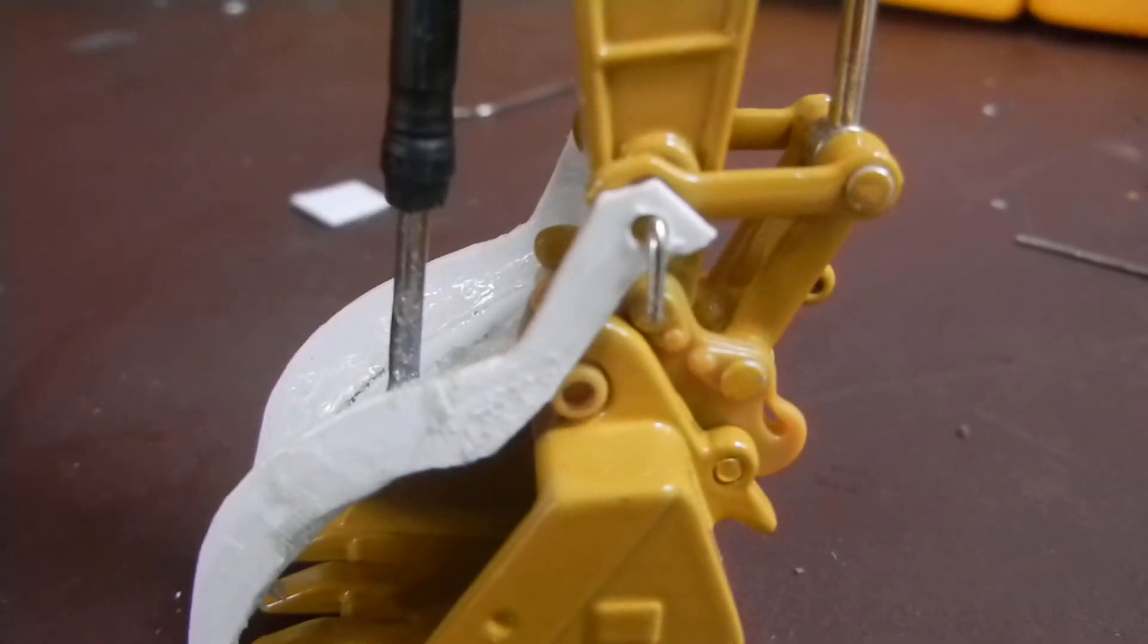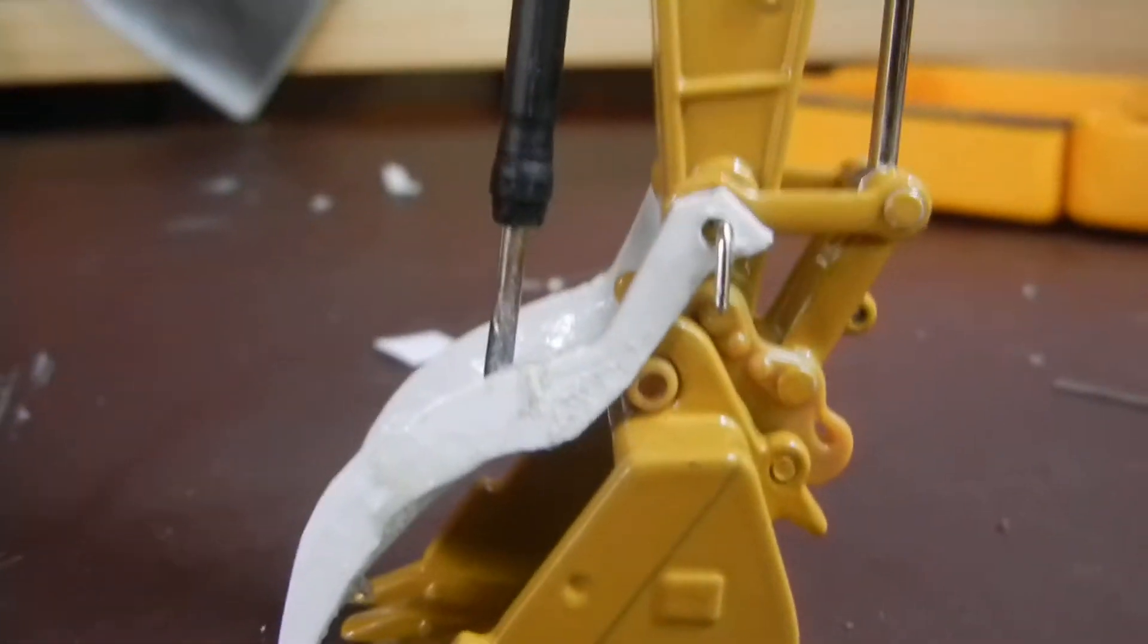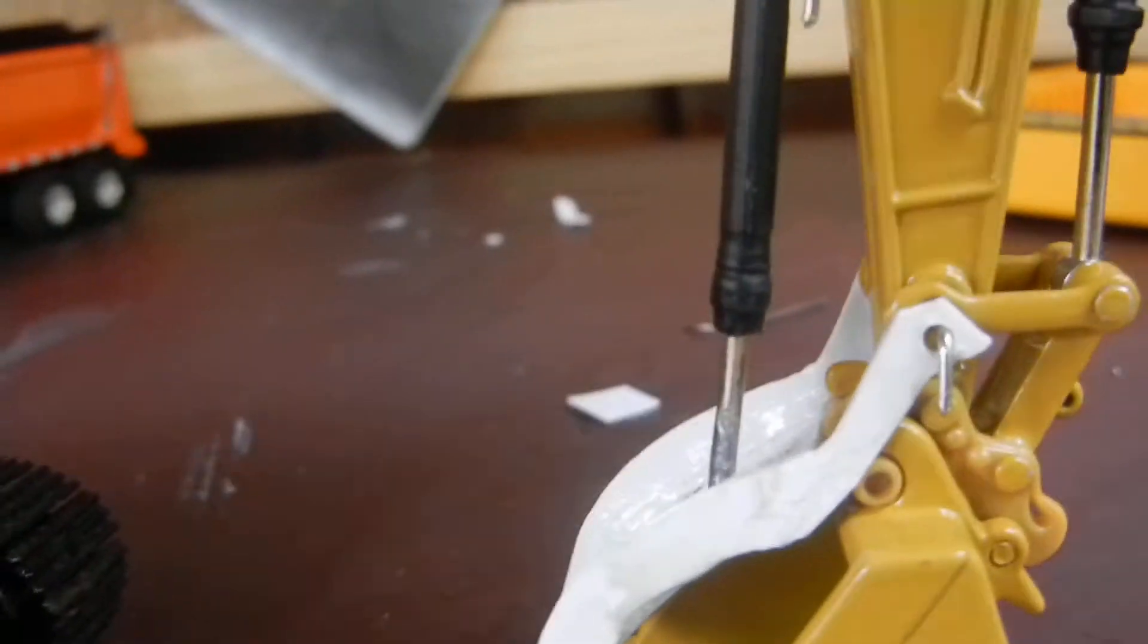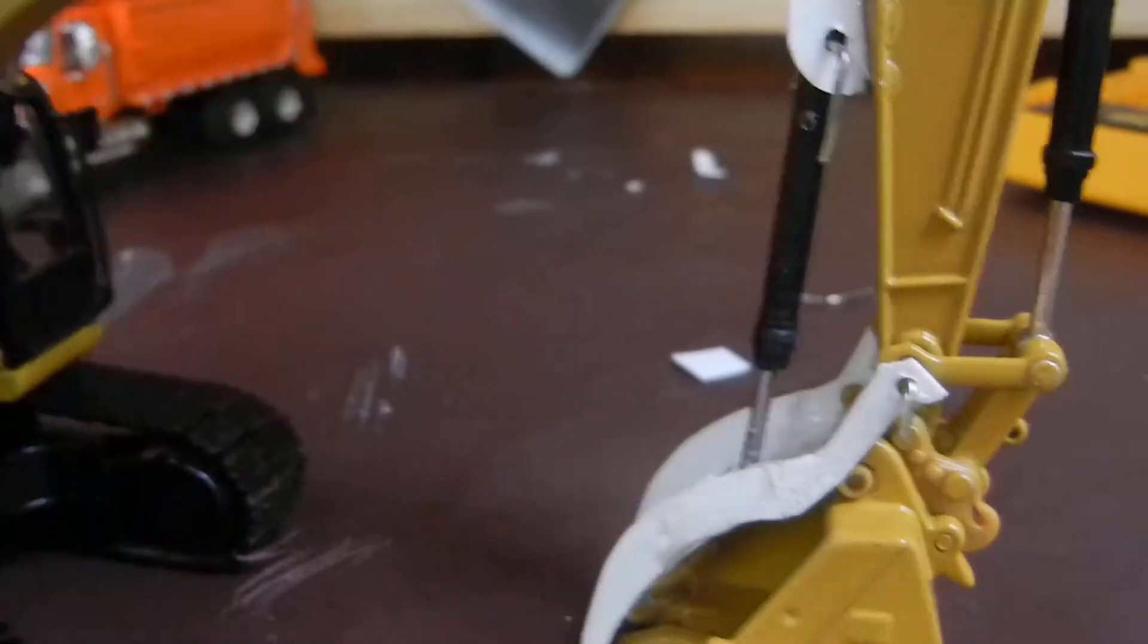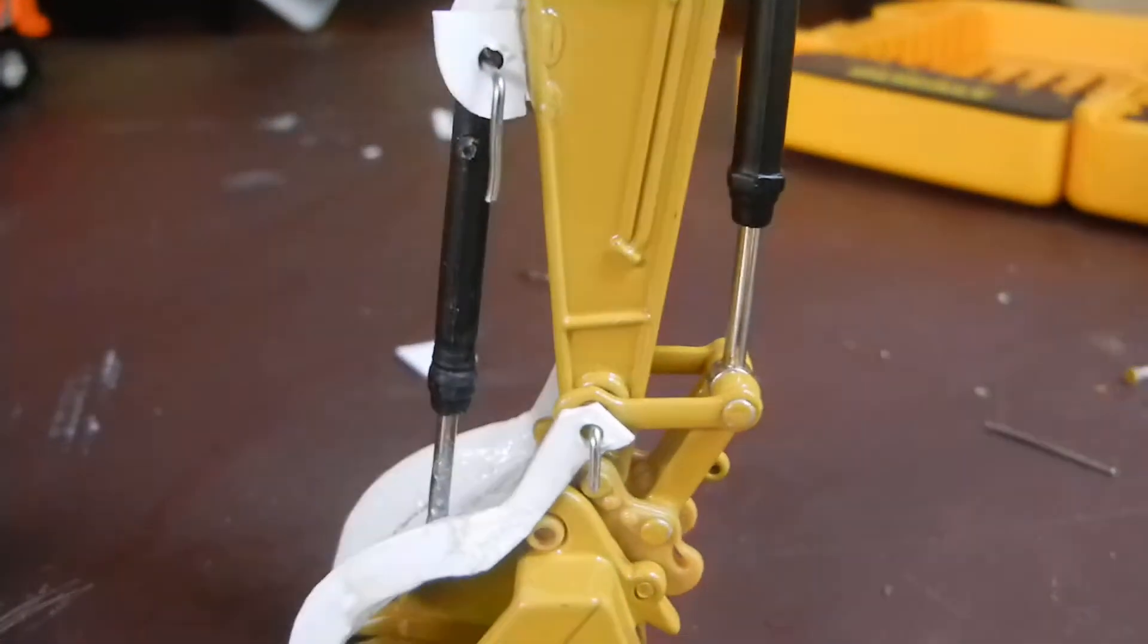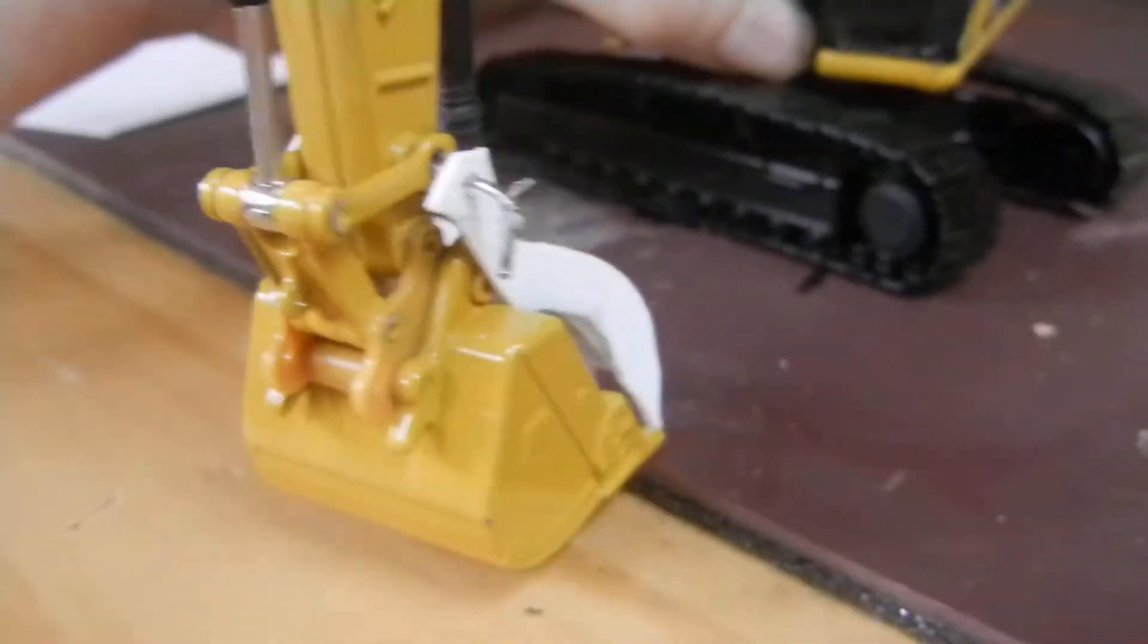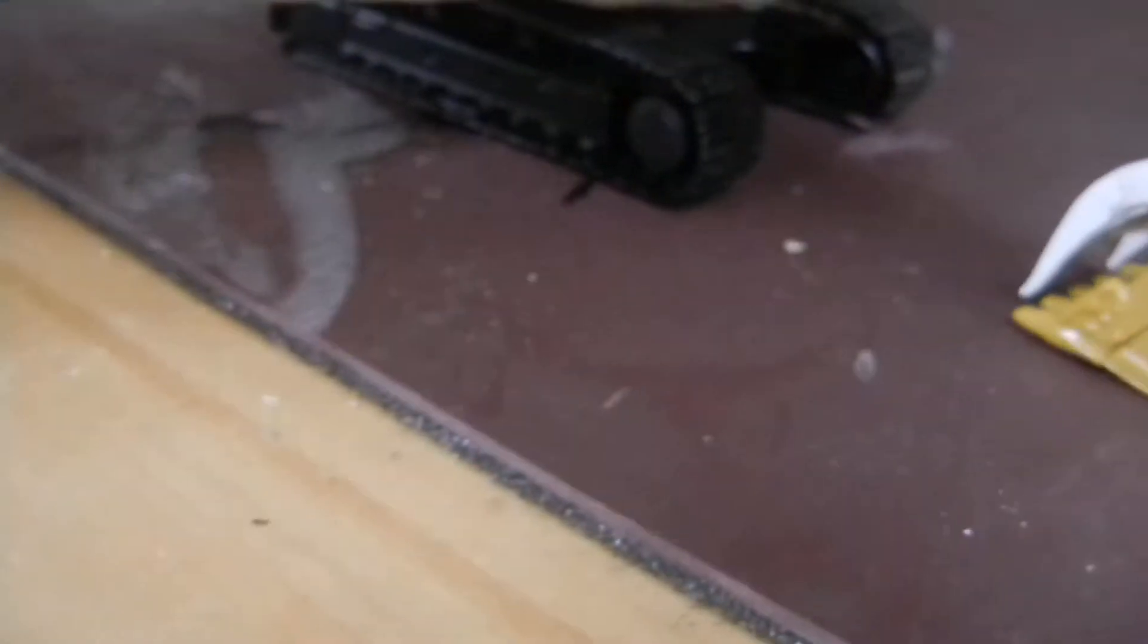And I had to drill out that pin there. Actually, I still have it. Here it is. So yeah, then I just used a piece of paper clip again. Goes all the way through. Holds the thumb in place.